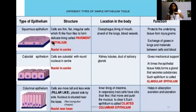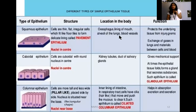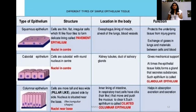Squamous epithelium cells are very thin, flat, and irregular — they look like floor tiles with the nucleus at the center. They are found in the oral cavity, alveoli of the lungs, and blood vessels. The major function of squamous epithelium is to protect the underlying tissue from injuries or germs, and to help in gas exchange in the lungs and material exchange in blood vessels.